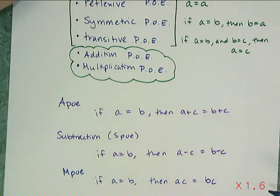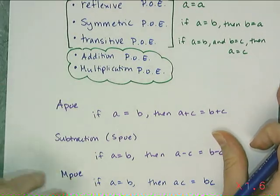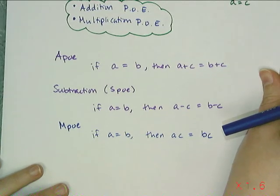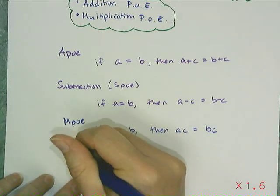So I can multiply both sides of the equation by the same quantity, and it's going to maintain its equivalence. Now I have to be careful, I have to actually multiply the entire side of the equation. So if there are multiple terms on one side of the equation, I have to use parentheses.